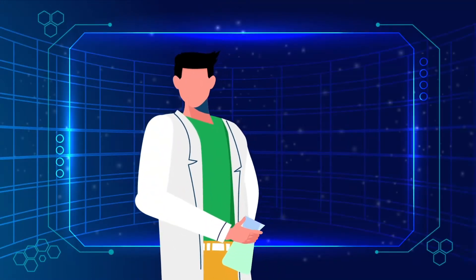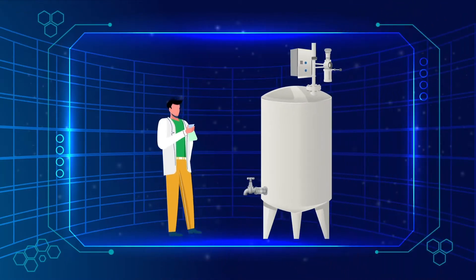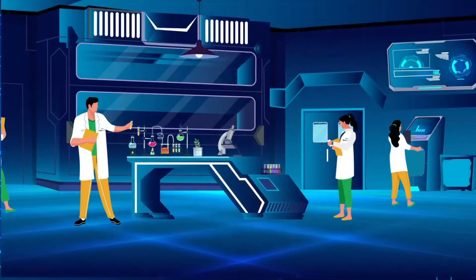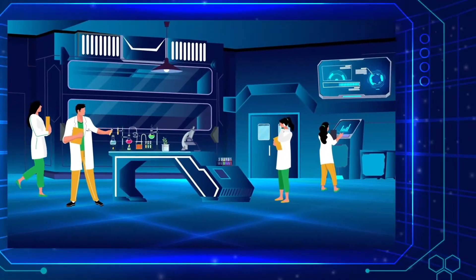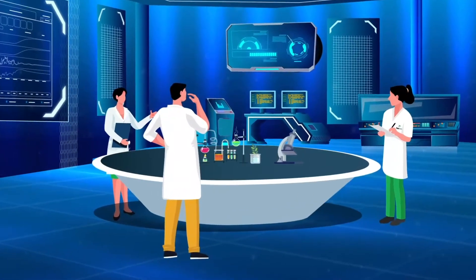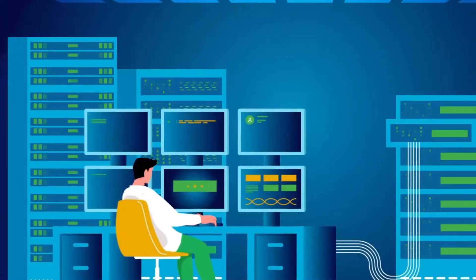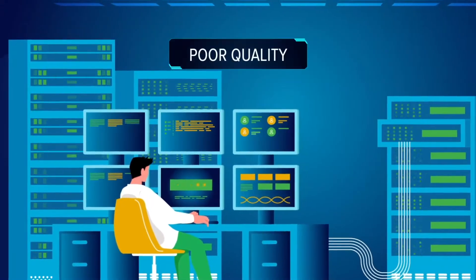Historically, the only way to measure critical polymer properties has been periodic manual sampling requiring analysis in a lab. This lab data is then sent to the plant control room. This information is outdated, and it's too late to correct process deviations.